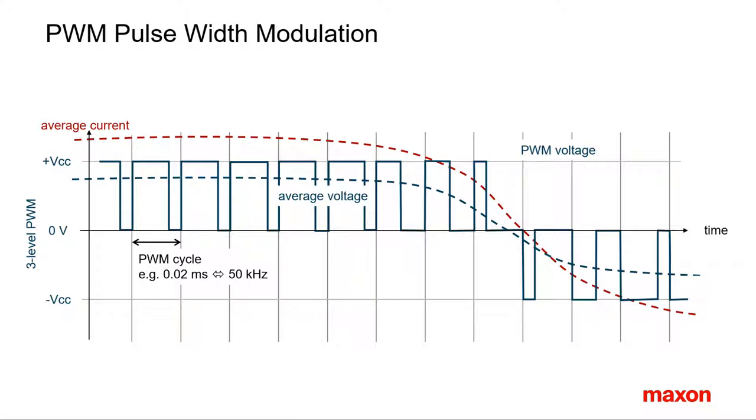Older drivers use a two-level scheme that switches between plus and minus the supply voltage directly, with the drawback that current ripples and hence motor heating becomes much larger. In this tutorial, we only look at the state-of-the-art three-level PWM.